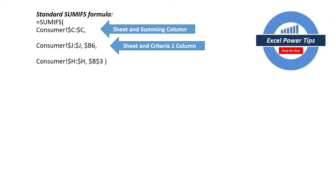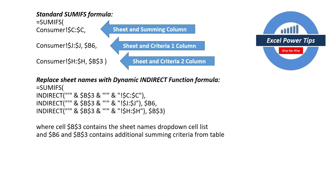Then we need to know what the criteria one column is — in this case it's column J — and the criteria is held in cell B6. For the second criteria, it's the consumer sheet name again. This time the criteria column is column H and the criteria two value is held in cell B3. So all we need to do is replace the sheet names with the dynamic INDIRECT function formula.